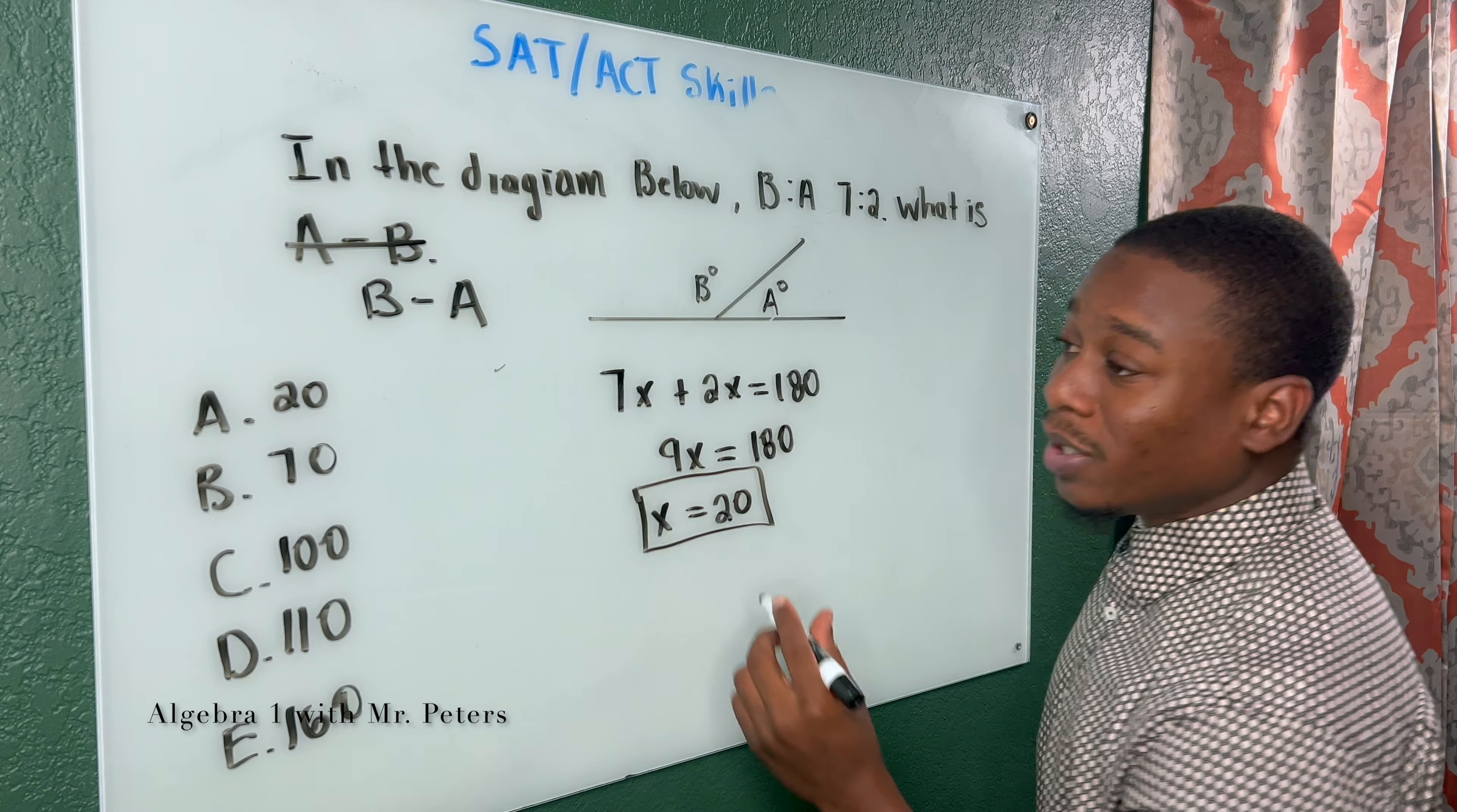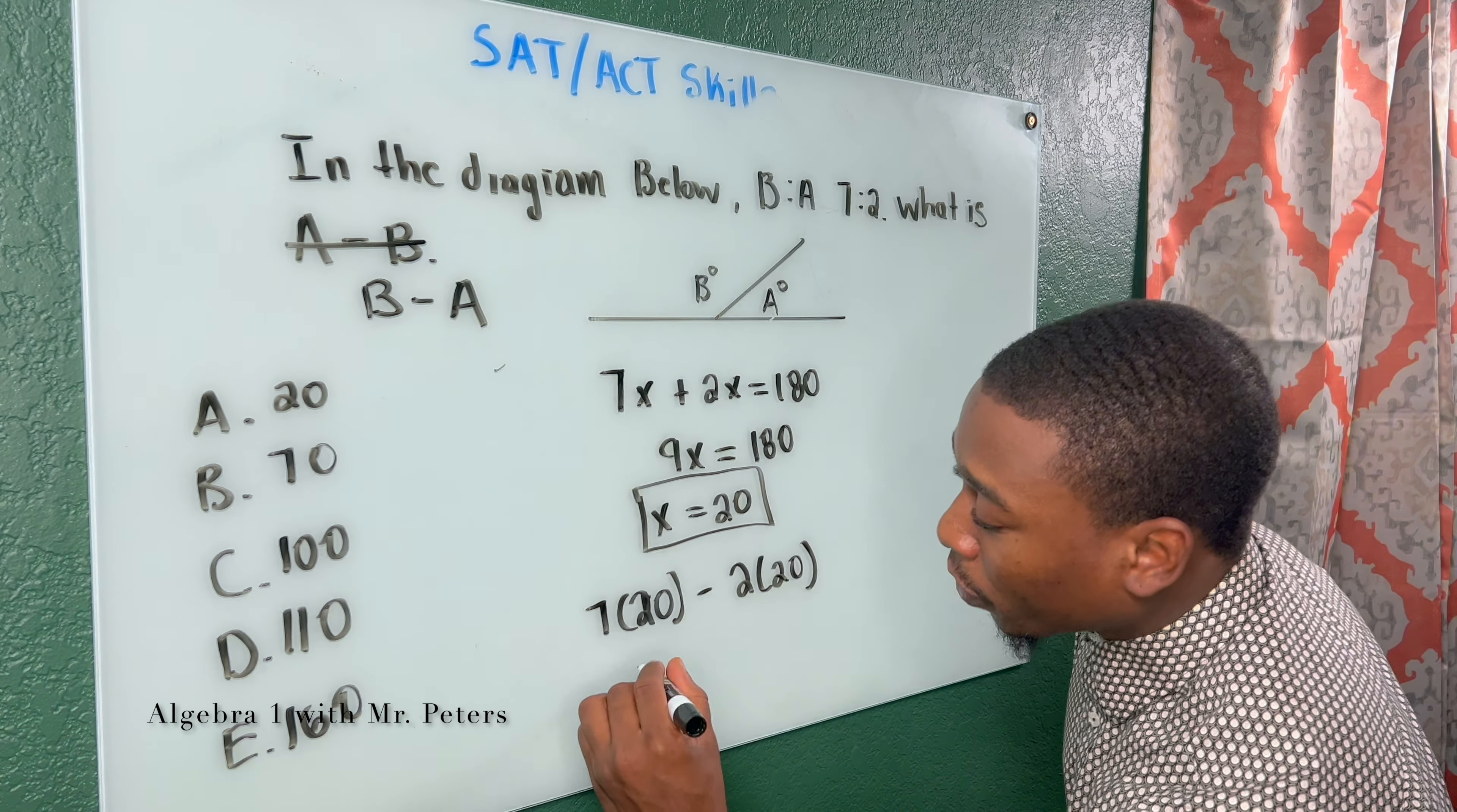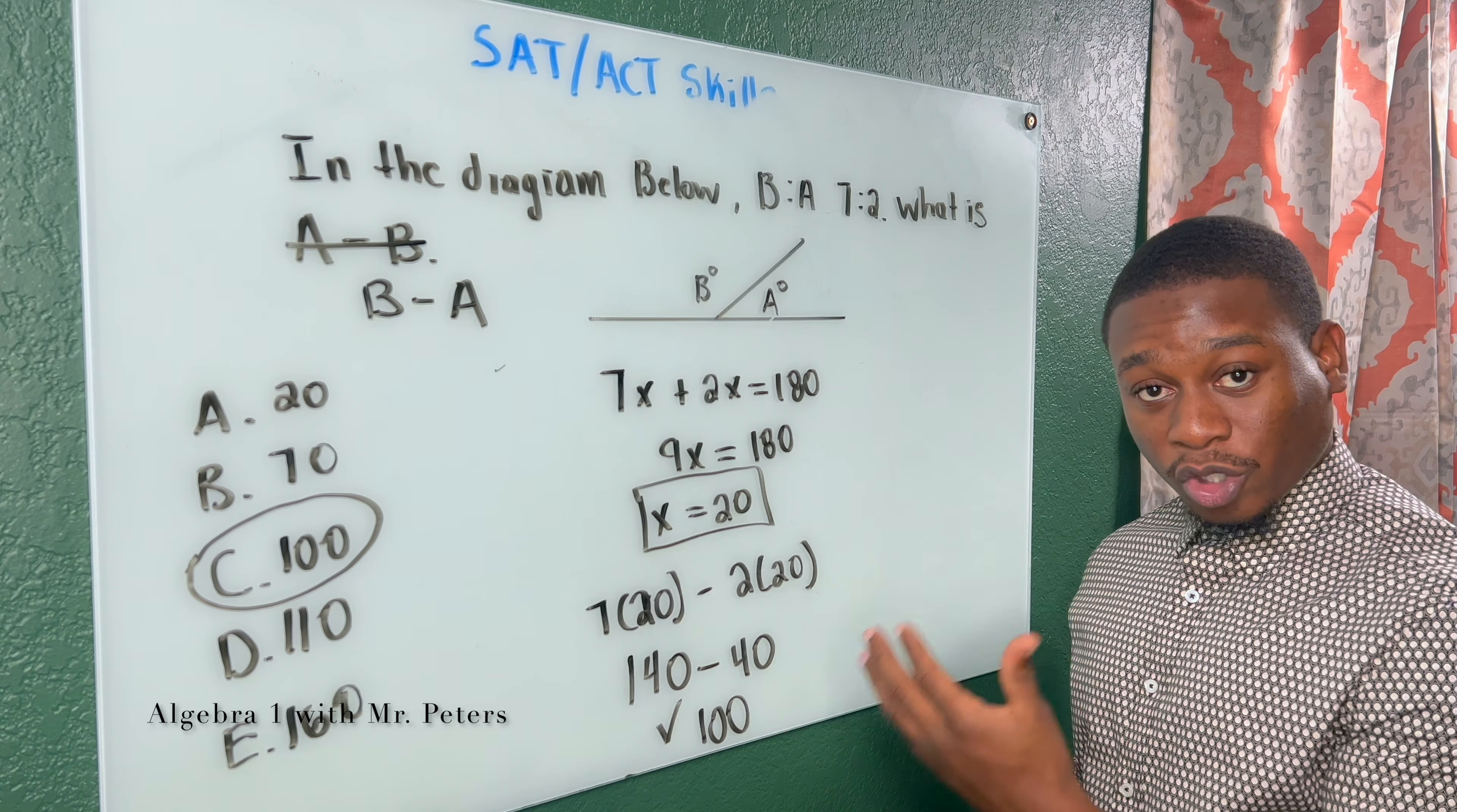And now what we need to do, this is not the answer. This is a trick. Now we need to multiply 20 by 7. So we have 20 times 7 minus 2 times 20, so that we could get the value of B minus A. So I'm going to have 140 minus 40. And the difference between these two values should be 100 degrees. So when you have a ratio like this, just remember that the hint they gave you is B plus A needs to equal 180 for a straight line.